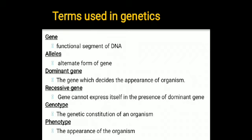Phenotype is nothing but the appearance of the organism. For example, if we say that a plant is tall in nature, we can identify that it is a tall plant. Genotype means based upon the gene we can identify it, but phenotype means based upon morphological or physiological features we can identify the plant. It is the observable expression of the genes — an inherited feature or an individual's appearance, such as tallness or dwarfness.